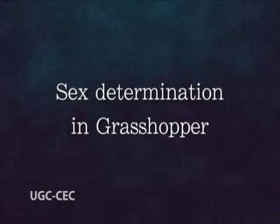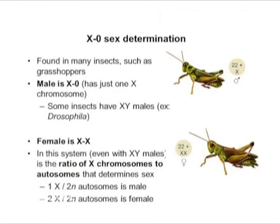In grasshopper, the females have 11 pairs of autosomes and one pair of X chromosomes, represented as 11AA + XX. The males have 11 pairs of autosomes and only one X chromosome, represented as 11AA + XO, said to be evolved by the loss of the Y chromosome. The female produces only one type of gamete carrying 11 autosomes and one X chromosome, but the male produces two types: one carrying 11 autosomes and one X chromosome, and the other carrying only autosomes.